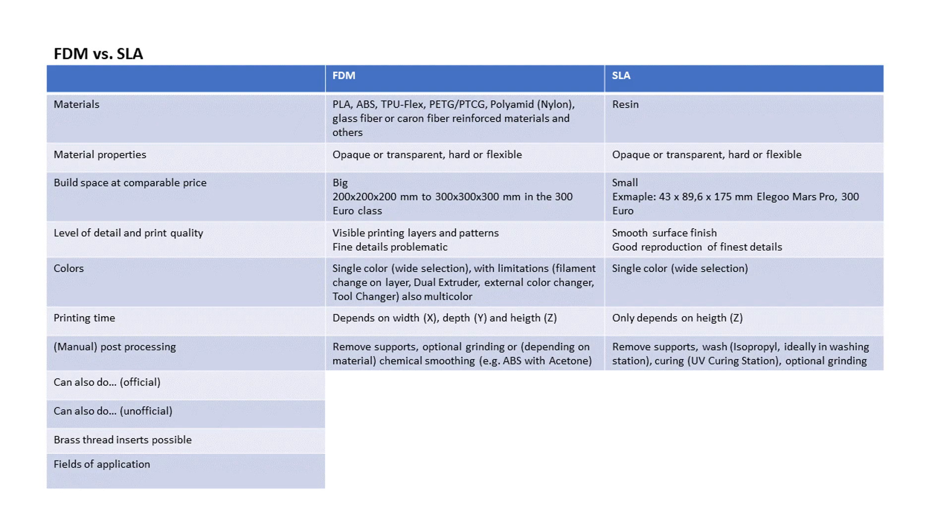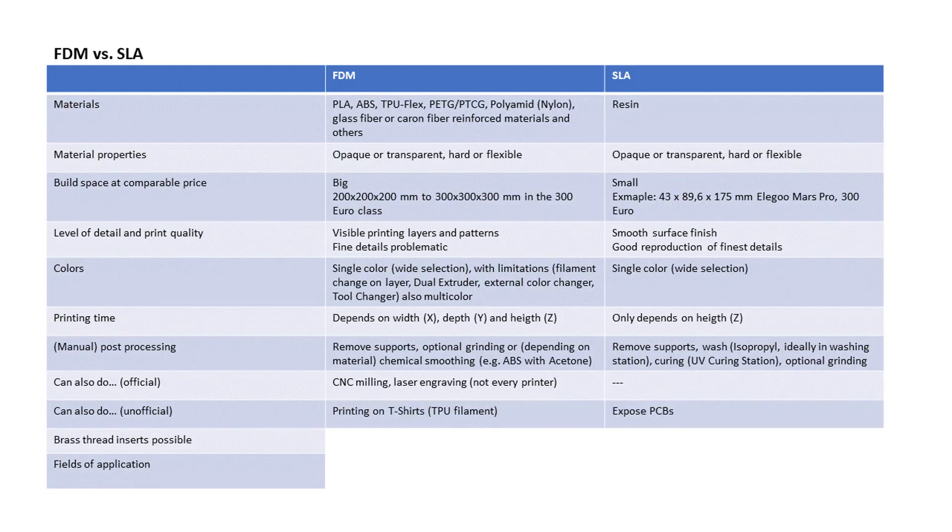FDM prints can be reworked by grinding them, or you can opt for chemical smoothing like ABS with acetone fumes. SLA prints need to be washed with isopropyl alcohol, then cured with UV light, and in some cases they also might require a little bit of grinding. As FDM printers are very similar to CNC routers, there are some models with interchangeable tool heads. These can also do CNC milling or laser engraving. SLA printers do not have such a second life. At least not officially.